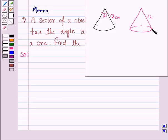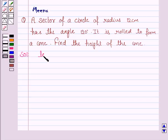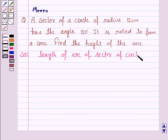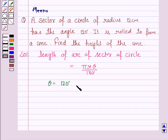So we first find the circumference of the circular base of the cone — that is, we first find the length of the arc. The length of arc of a sector of a circle is given by the formula: pi times r times theta divided by 180 degrees, where theta is 120 degrees and r is 12 cm.